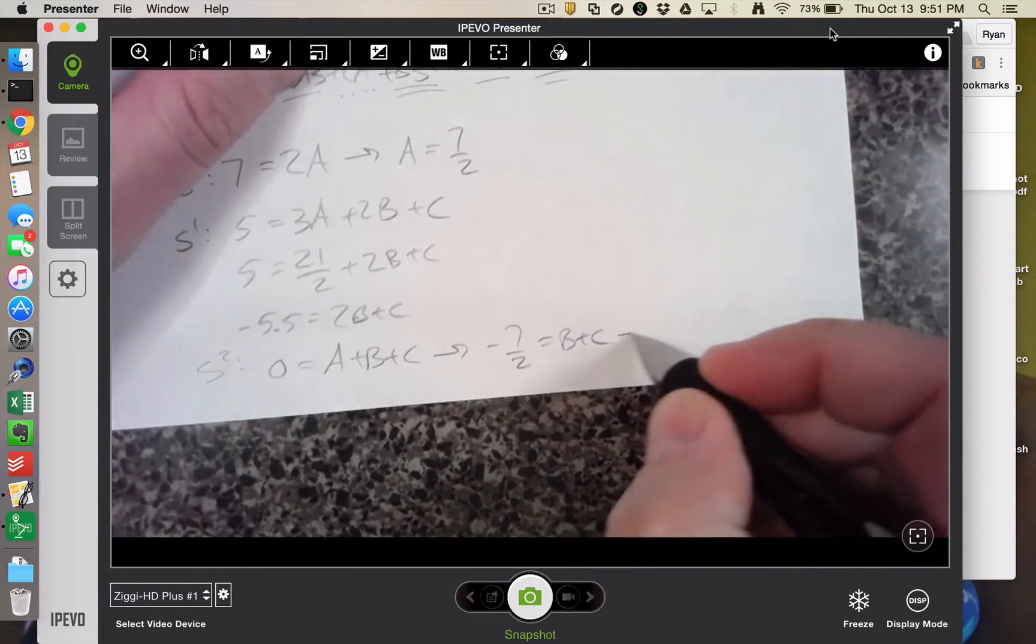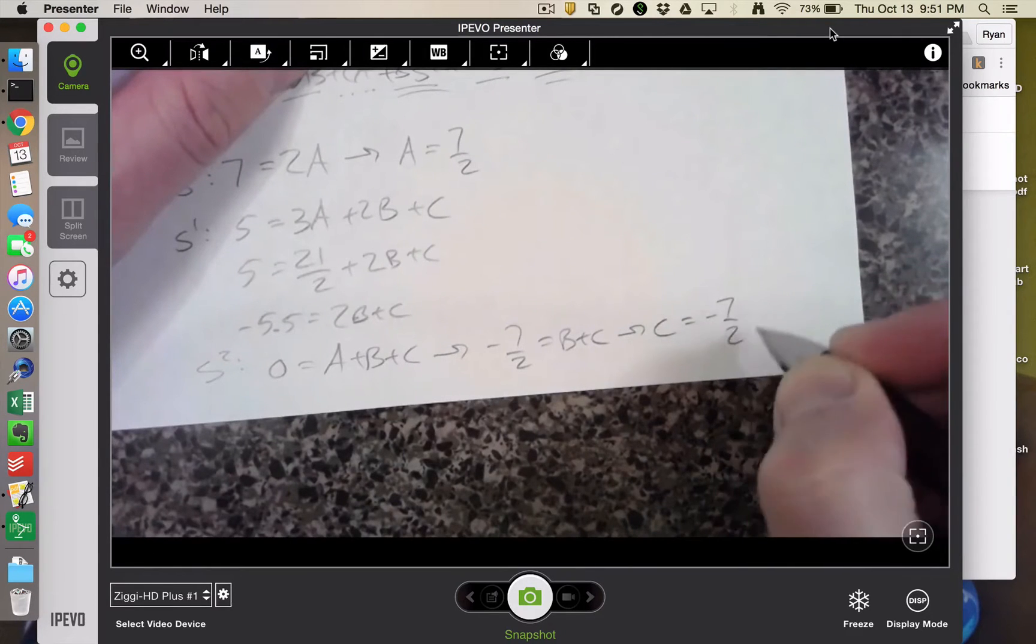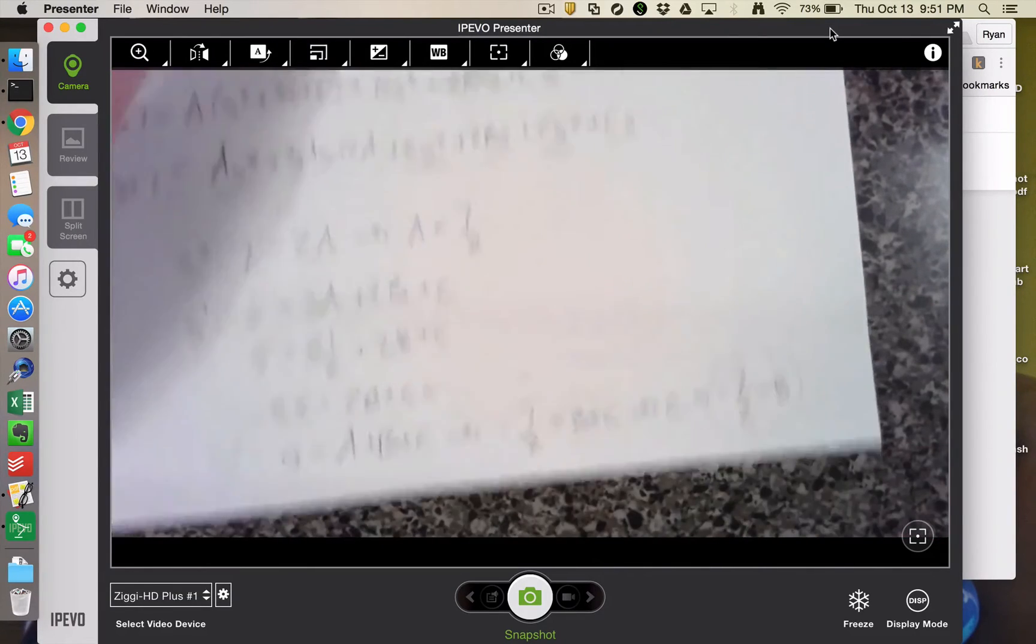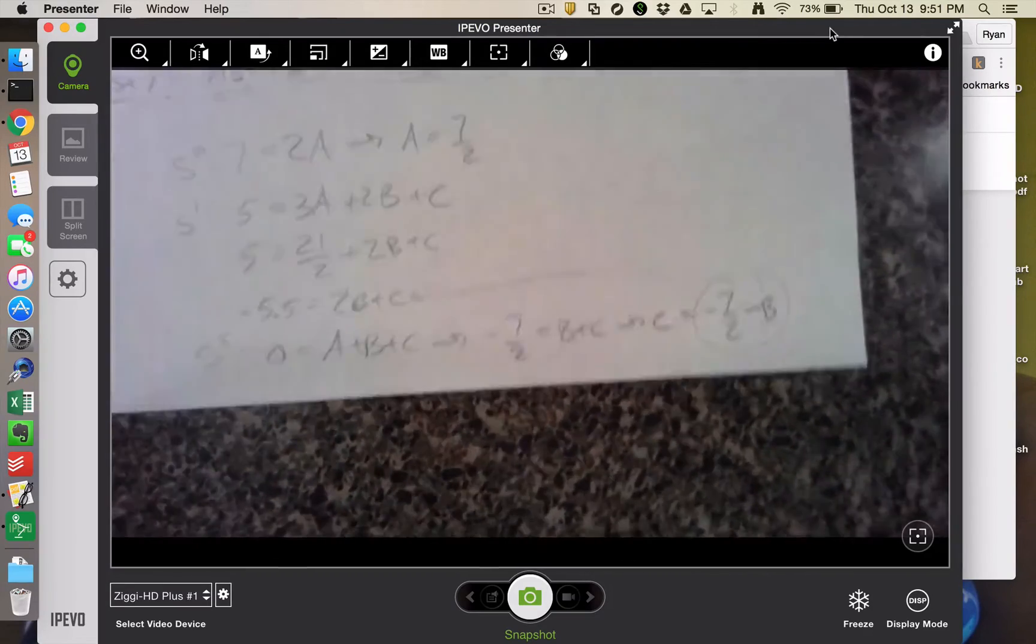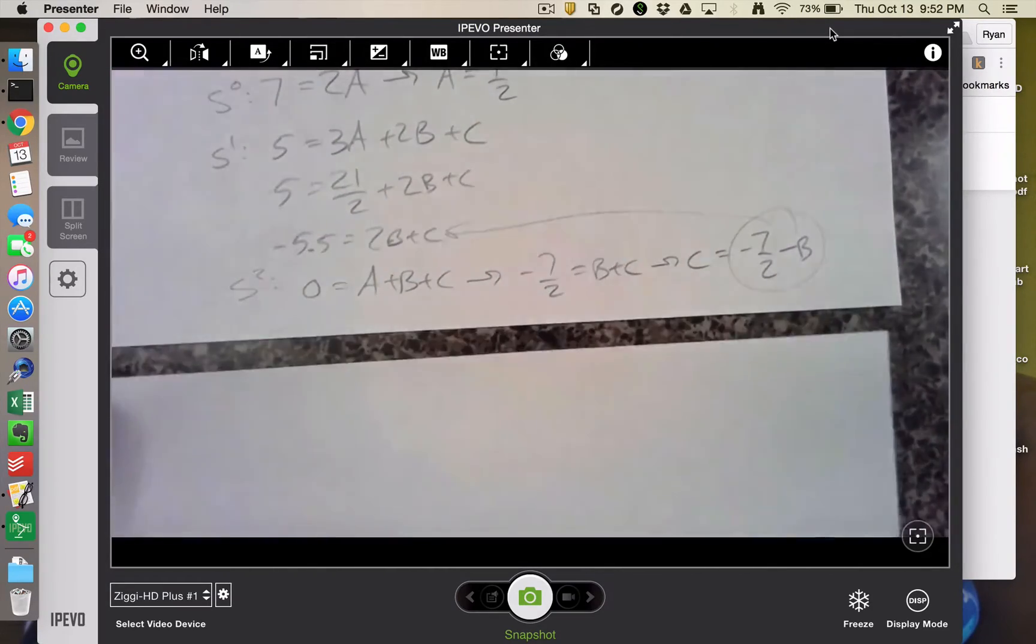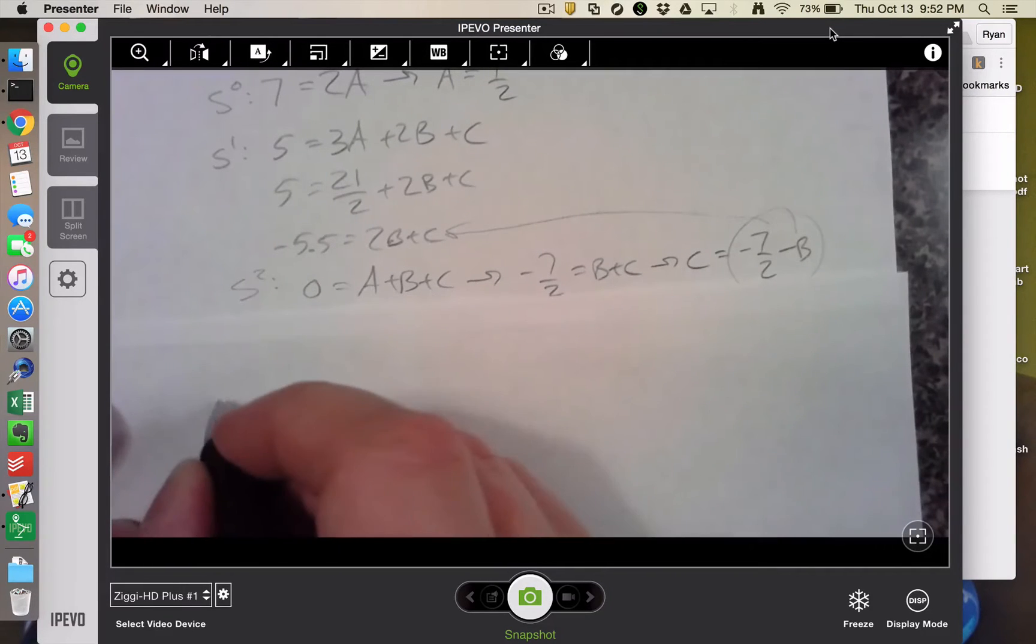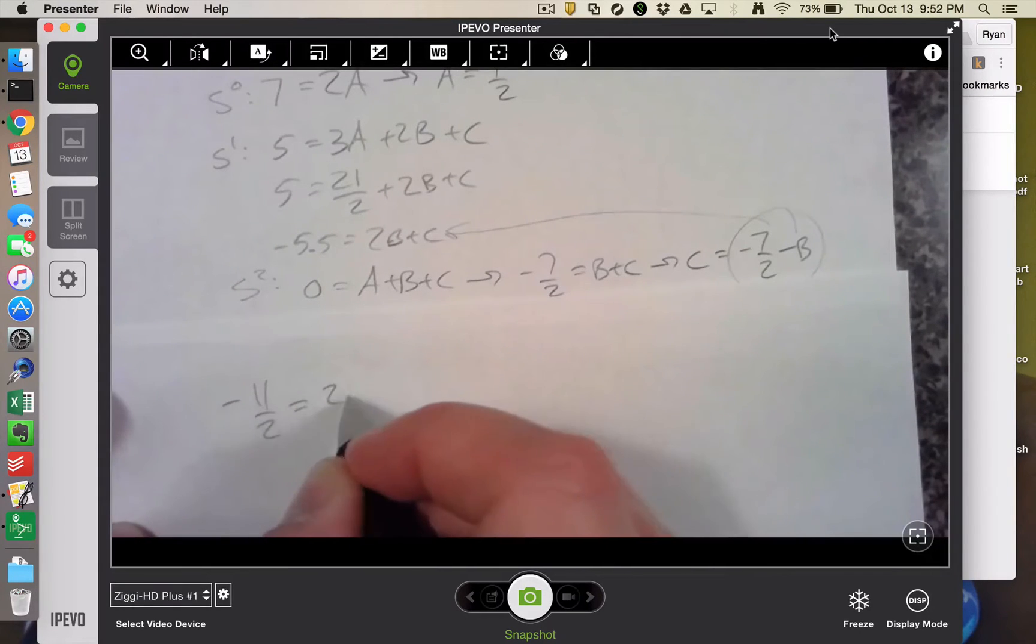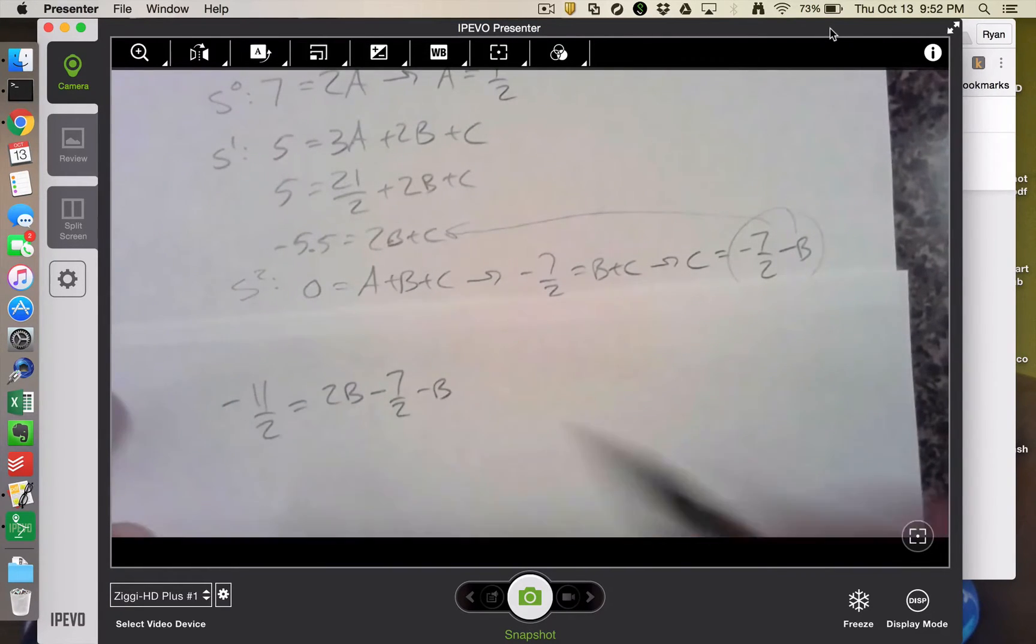I guess I'm just going to solve this one and say that c is equal to a negative 7 halves minus b. Then I can take that and shove it in there. And see where we wind up. So a negative 11 halves is equal to 2b minus 7 halves minus b. So I'm going to get 2b minus b is just b. I'm going to add 7 halves to both sides. And so a negative 4 halves is equal to b. So b is just equal to negative 2.